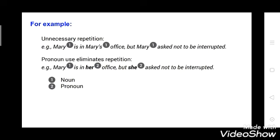Here is one example. Mary is in Mary's office but Mary asks not to be interrupted — here you can see we have used Mary almost three times. In order to avoid unnecessary repetition, we will write: Mary is in her office but she asks not to be interrupted. Both sentences are the same, but to make the sentence more natural we use her and she. So Mary is a noun and the pronouns are her and she. Pronouns eliminate repetition and make our speech more natural.